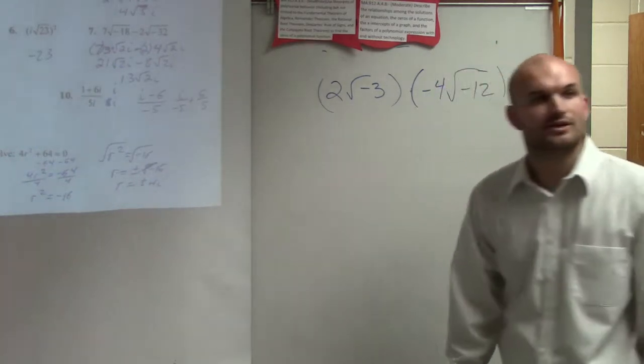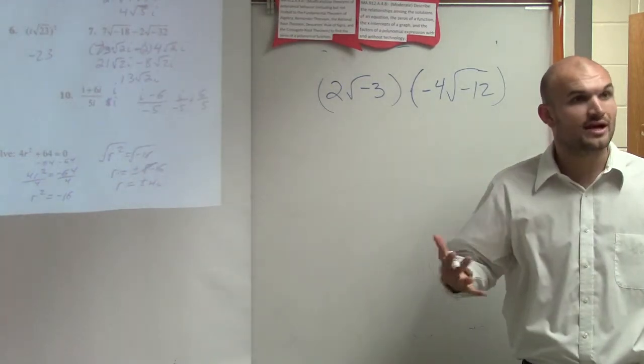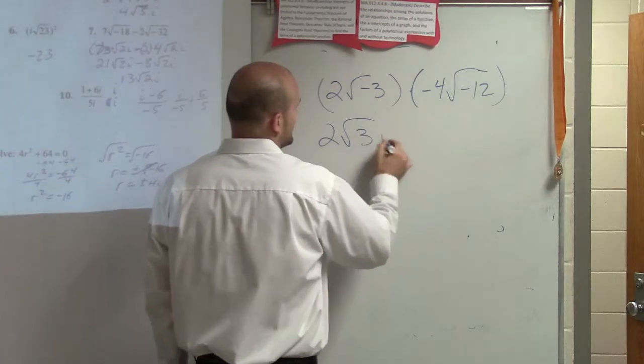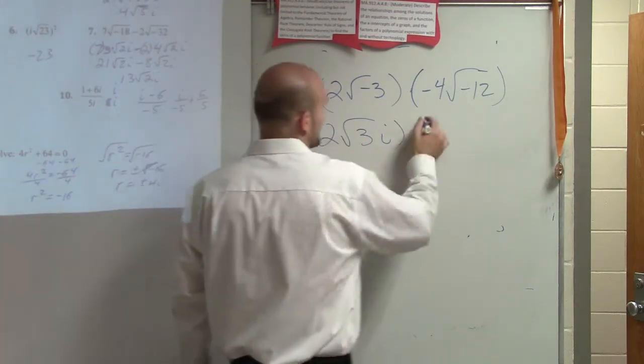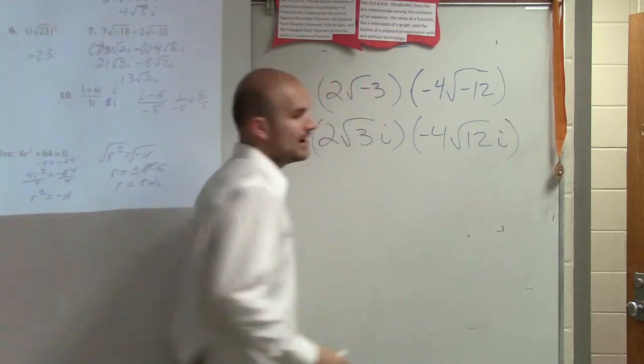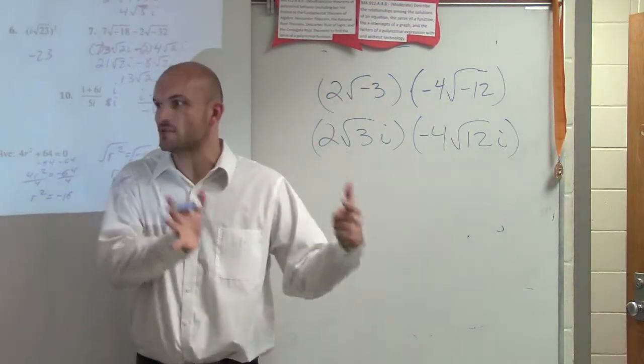So the first thing, I'm going to go through, don't even deal with this negative square root. Let's convert that over to our i's. So we have 2 radical 3i times negative 4 radical 12i. Because remember we talked about the square root principle. Take out the square root of negative 1.